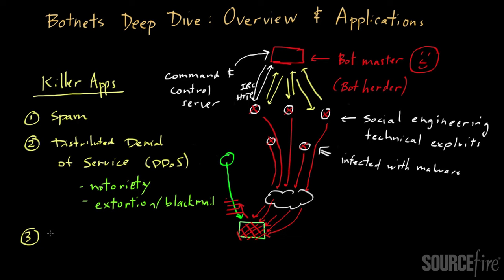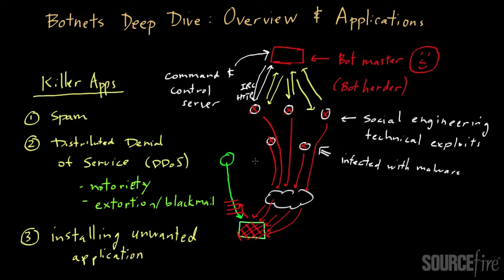A third application of botnets is installing unwanted applications. People often do pay-per-install of all sorts of applications, and this turns out to be a very big business for bot masters. They'll rent out their botnet to somebody who wants to install applications across many systems. For example, a cyber criminal might want to install adware on bot-infected systems without the user's permission. The adware might supplant or replace banner ads on web pages with another ad, siphoning off potential ad revenue.